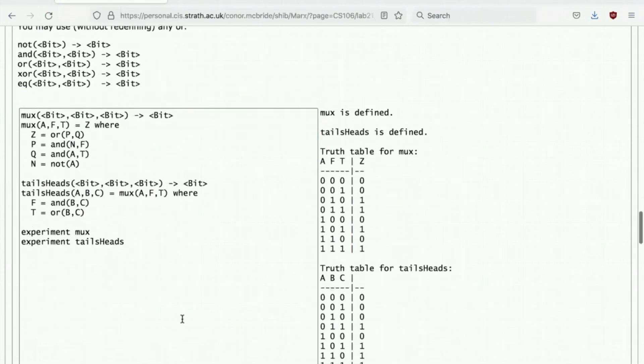So MUX is defined. And we can see that when A is zero, Z is F. And when A is 1, Z is T. And then plugging our same AND and OR gates into the F and T inputs, we're getting the same as before.